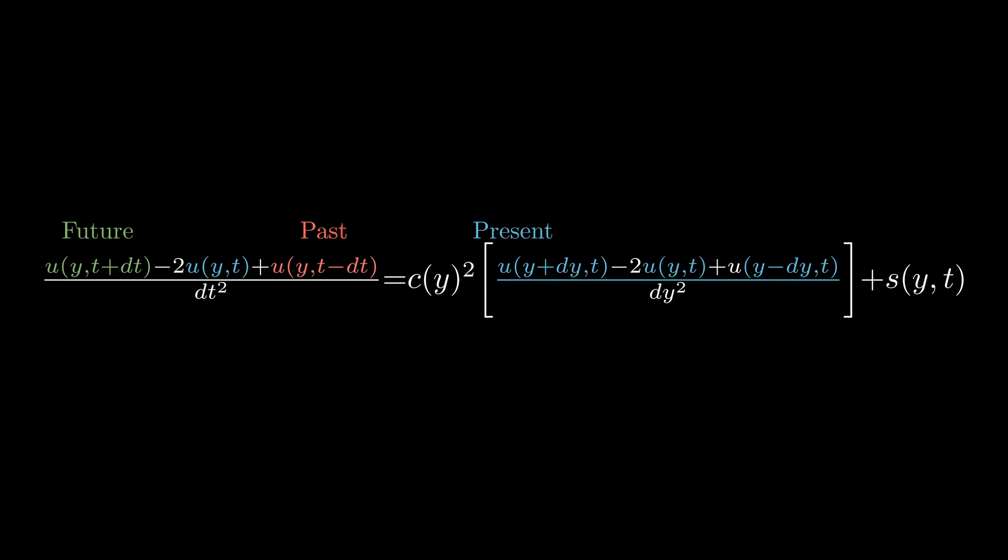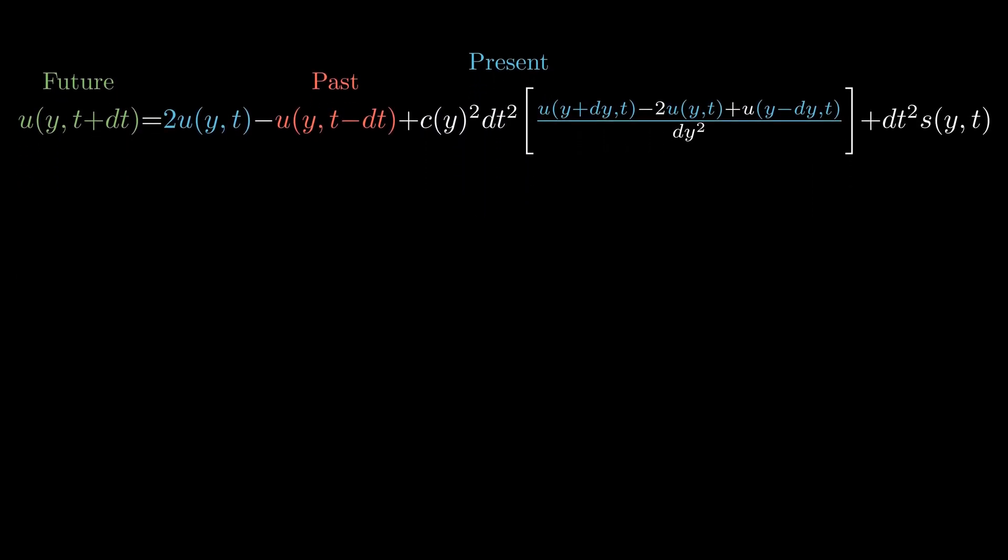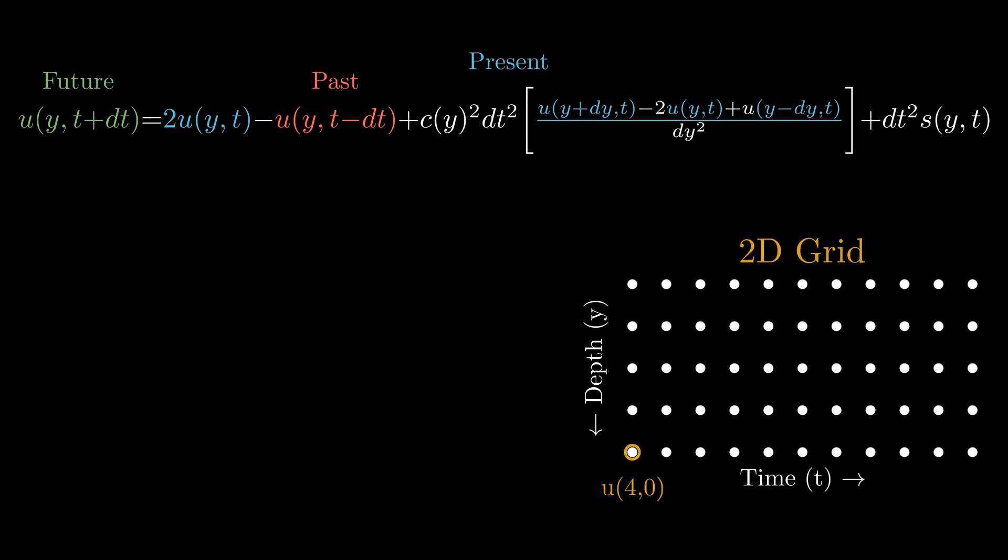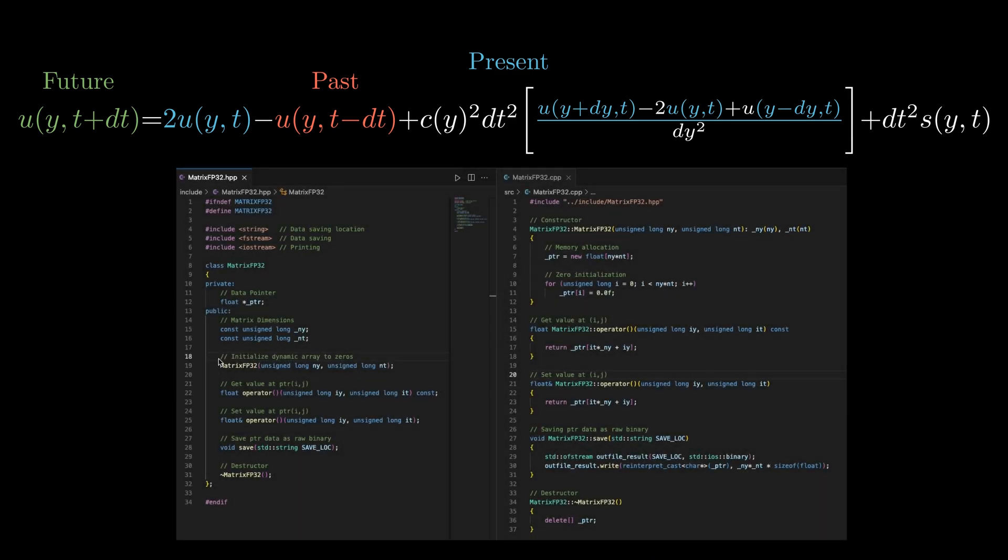For the solution, past and present terms were used to get the future. The variable u stores the displacement at all the grid points and ideally requires a 2D representation. I could have worked with linearized indexing, but I wrote a simple C++ class to handle the solution u.